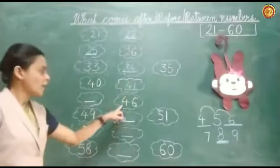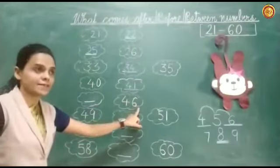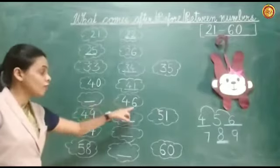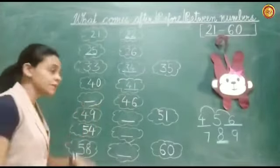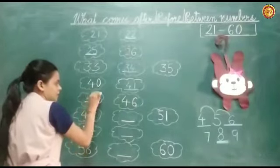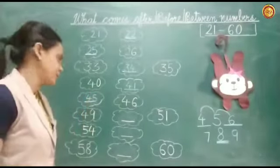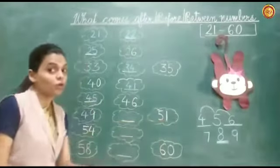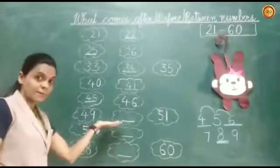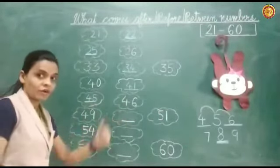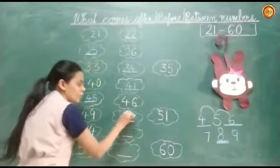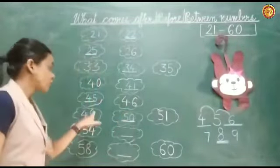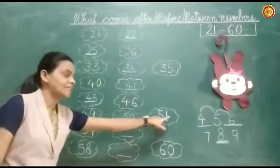Good. Now read this number — 46. The dash is before 46, so before 46, what will come here? 45. Now, 49 dash 51 — you know very well. Between number, after 49, what will come here? 50. Check it: 49, 50 and 51.